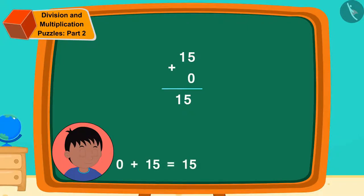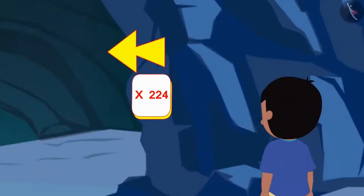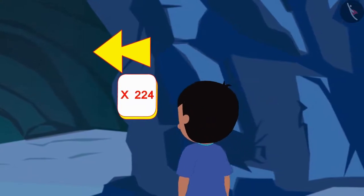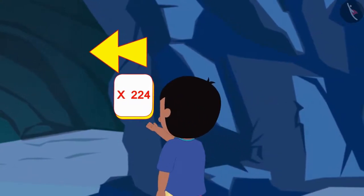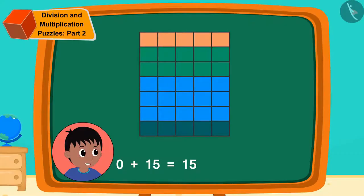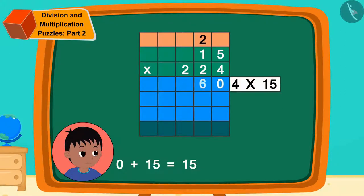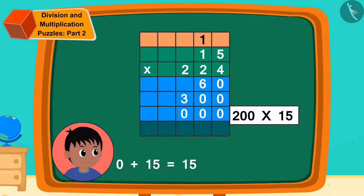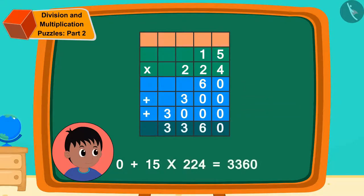Now here 224 is written along with the multiplication symbol. That means I have to multiply 15 by 224. Raju quickly multiplied 224 with 15 in this way and wrote down the answer.